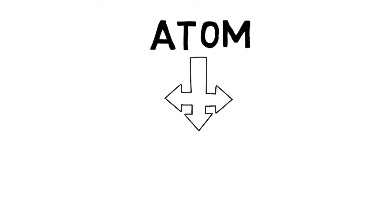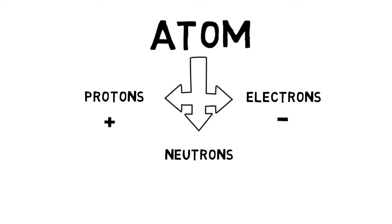Atom is made up of three types of particles: Protons, Neutrons and Electrons. Proton carries positive charge, electron carries negative charge and neutrons are electrically neutral.